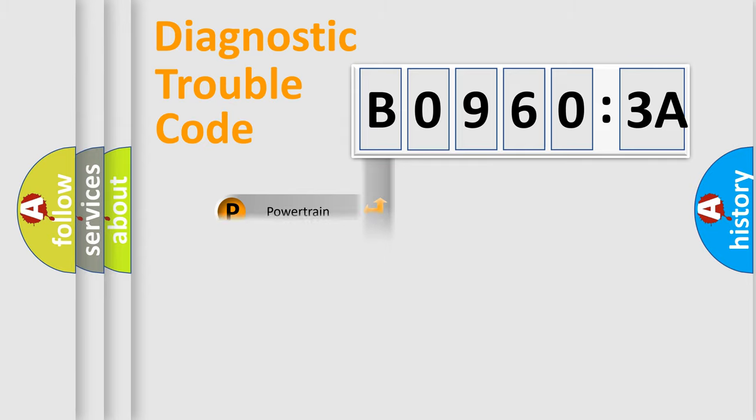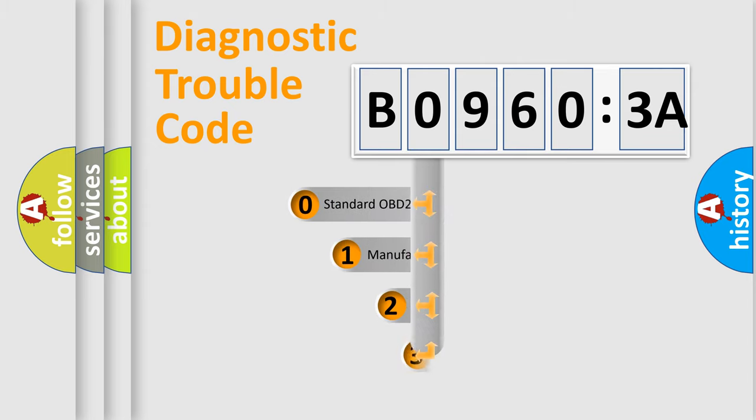Powertrain, Body, Chasis, Network. This distribution is defined in the first character code.